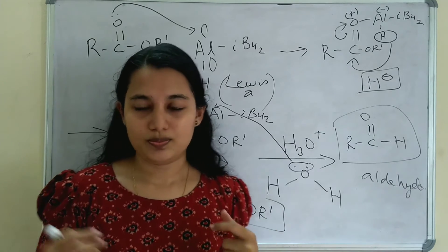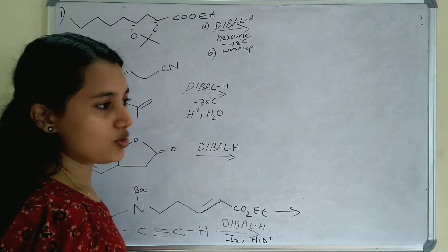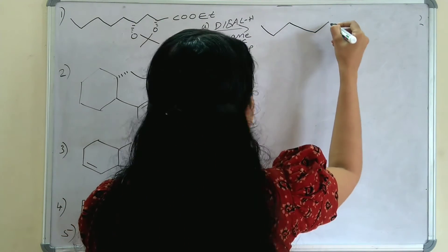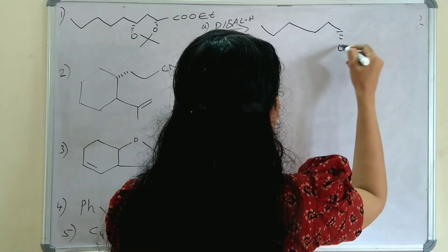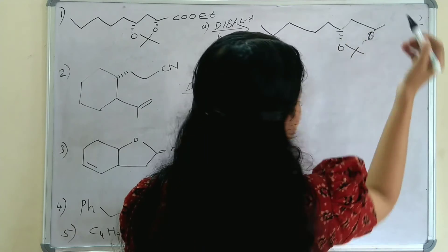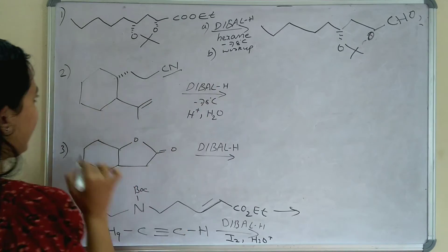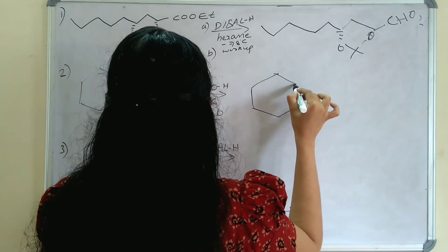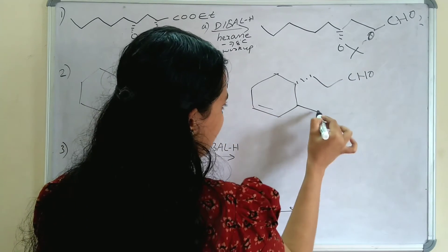Now we can solve some problems. In the first example, the functional group is an ester, C(=O)OEt — so this ester group is converted to an aldehyde (CHO). In the second example, the functional group is a silane ester, which is also converted to CHO. The double bond is unaffected.